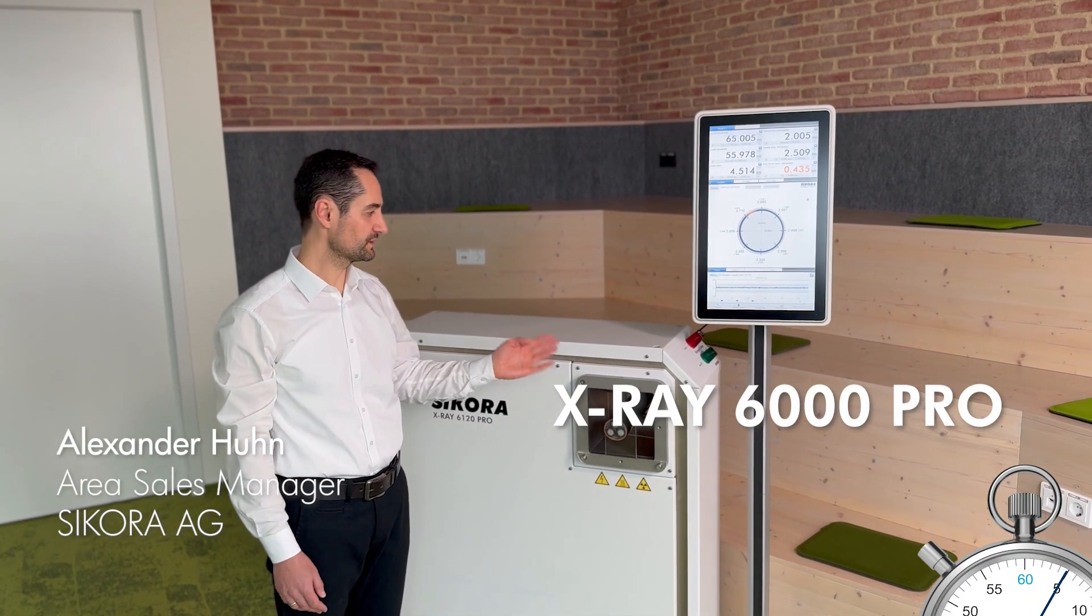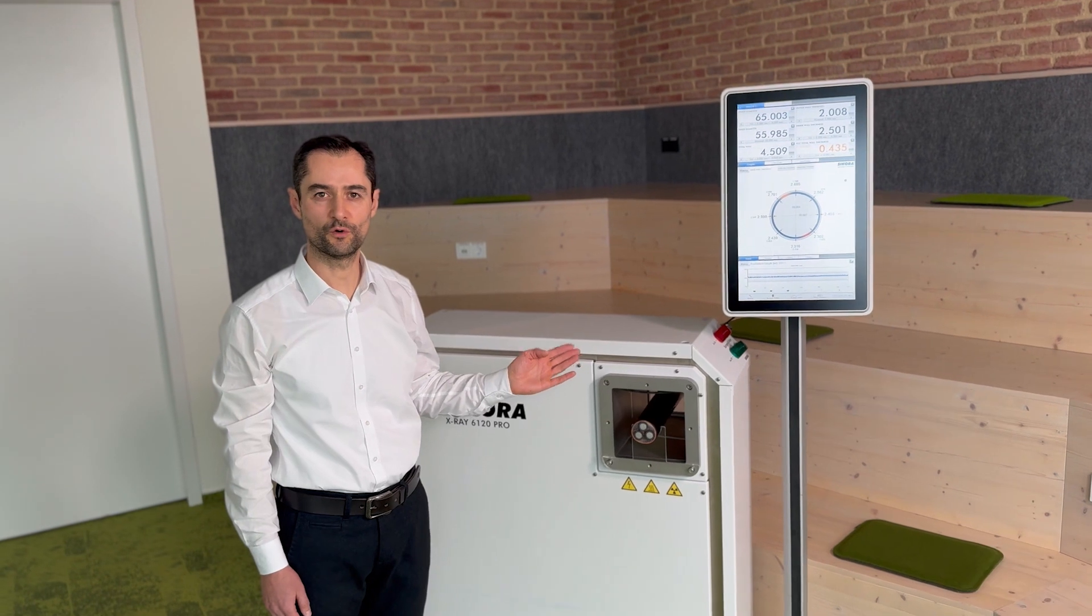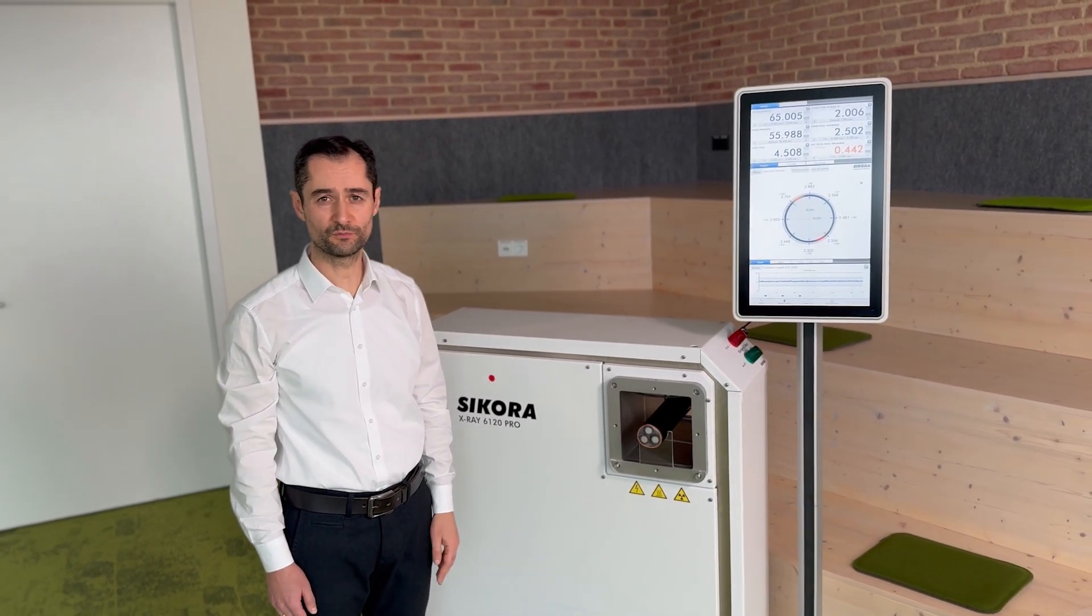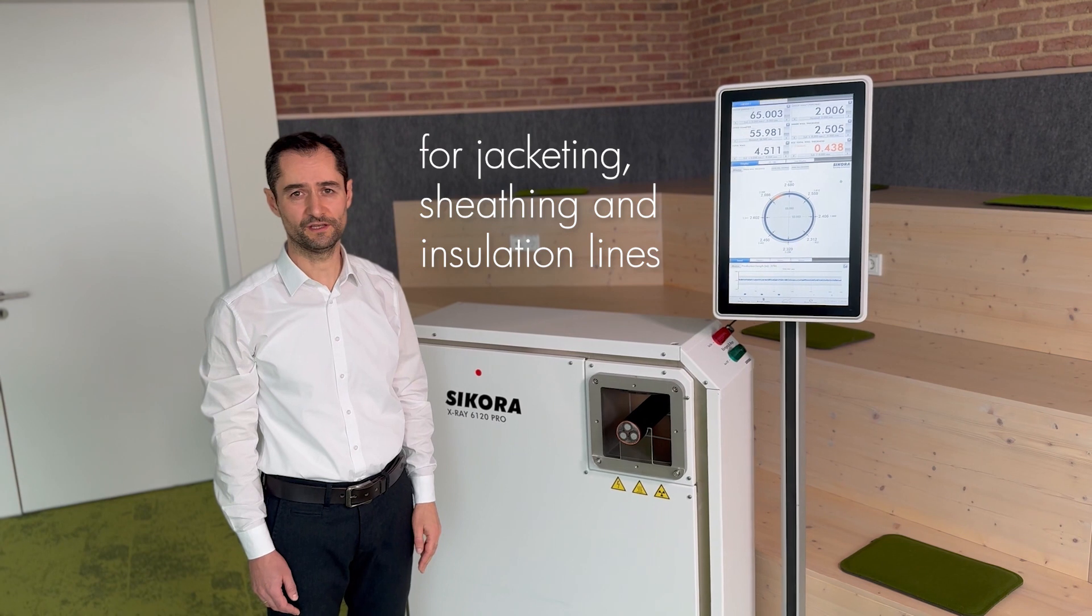The X-Ray 6000 Pro system is the perfect solution for online measurement of cables during the extrusion process in jacketing, sheathing, and insulation lines.